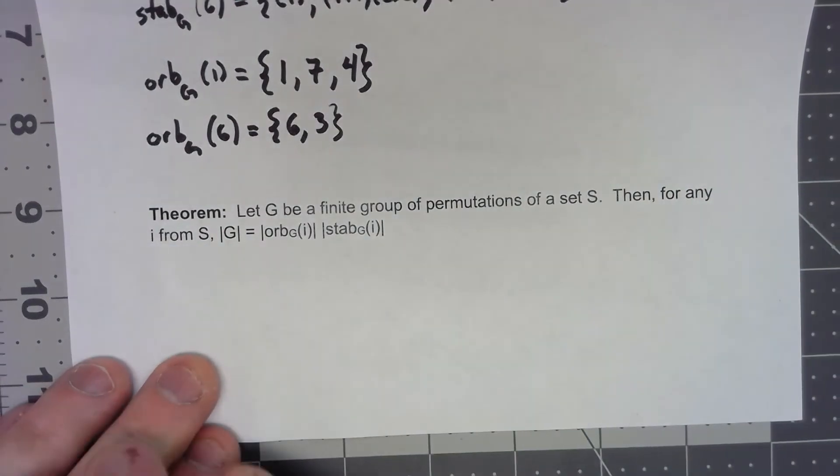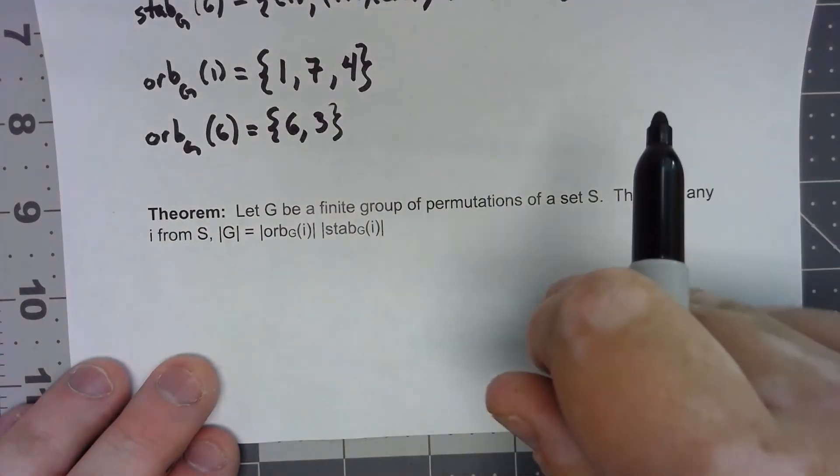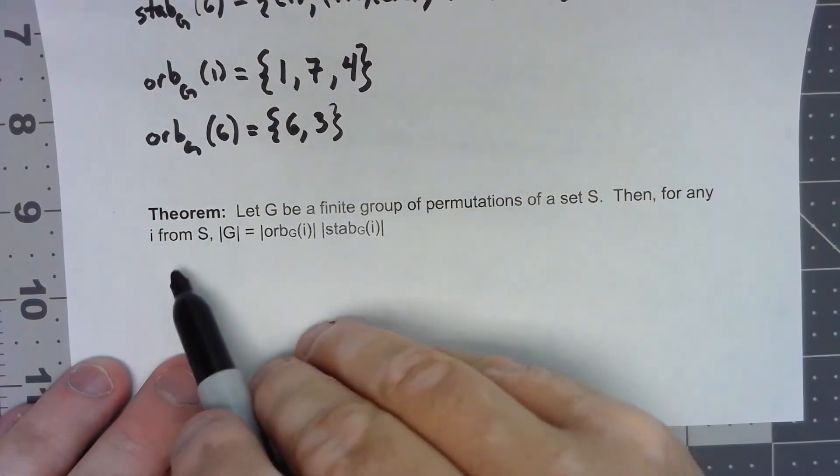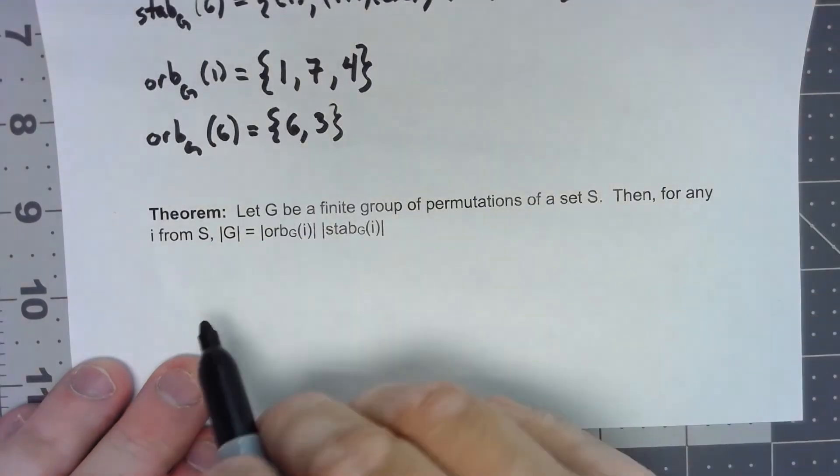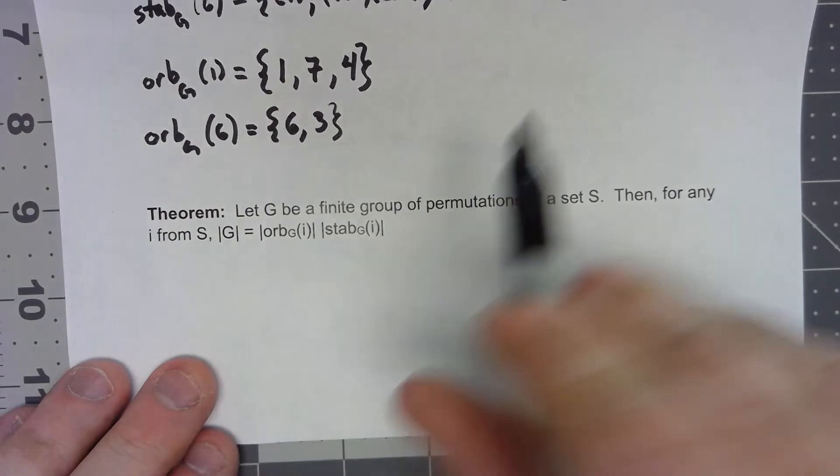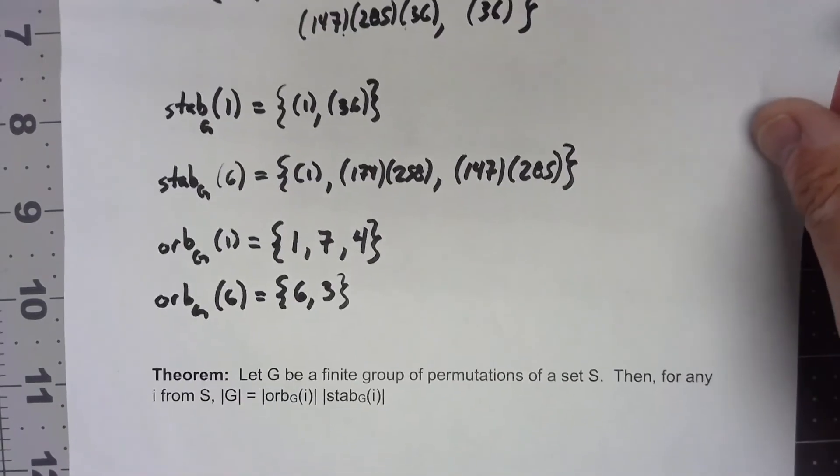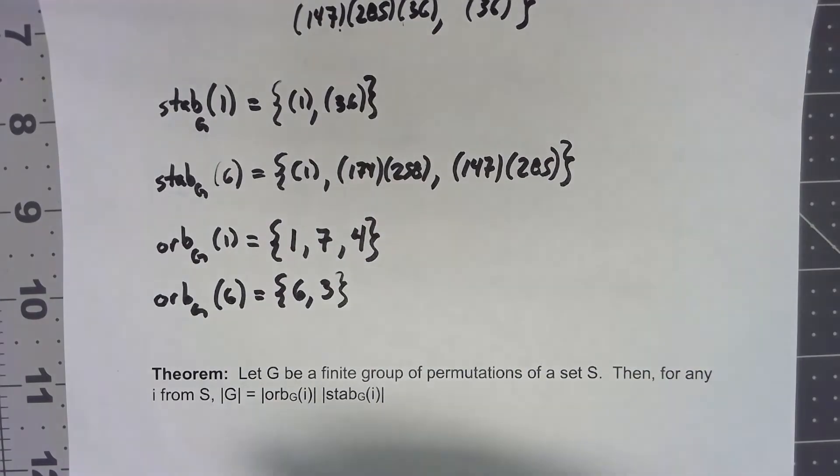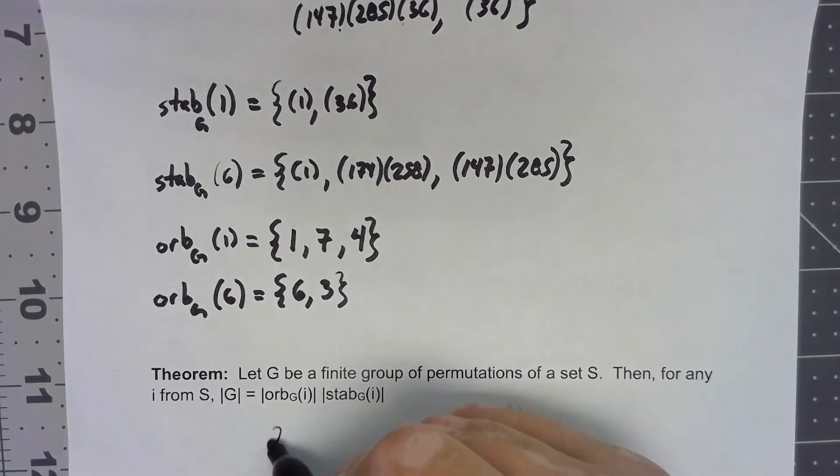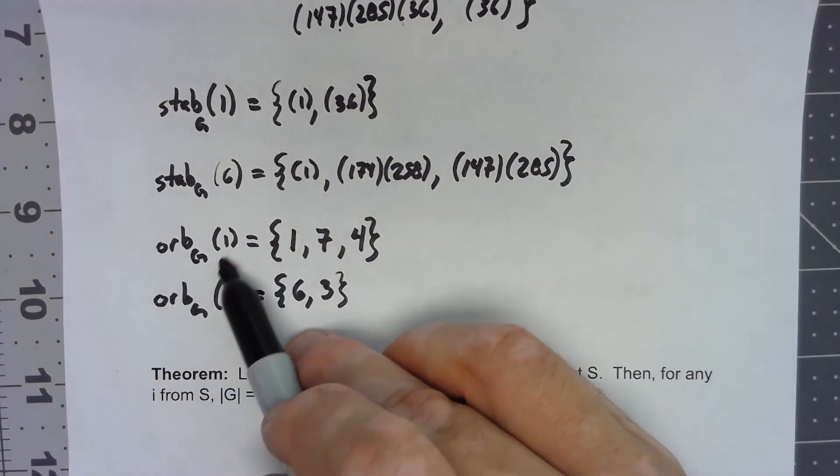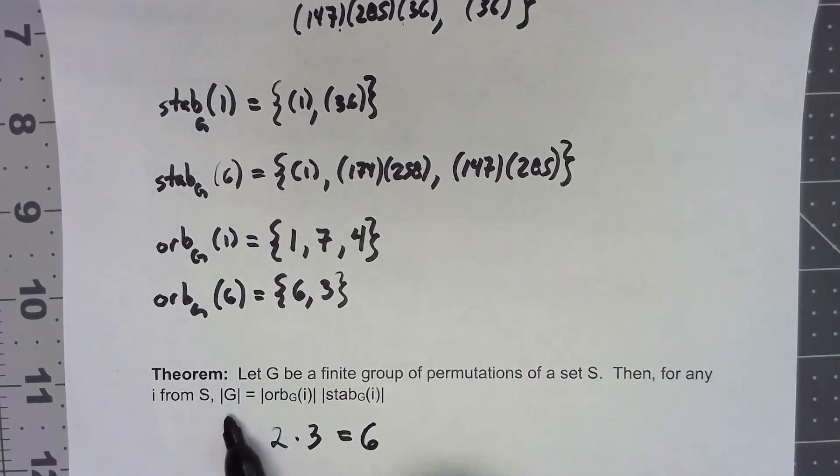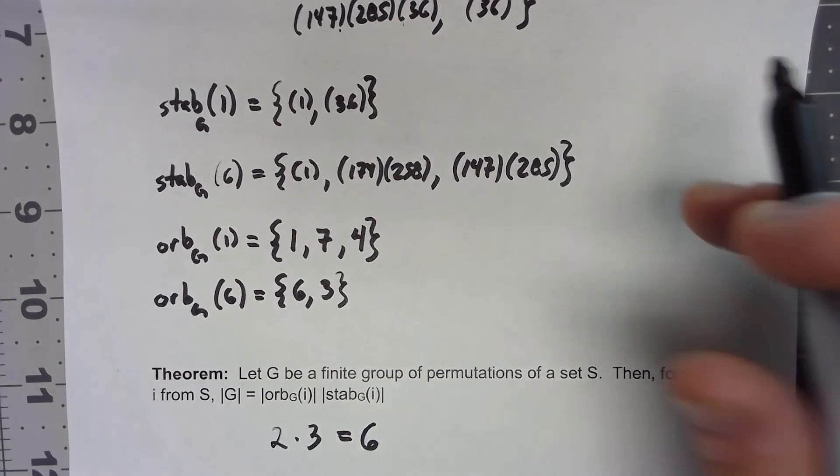One final theorem that I'm not going to prove is that if we have one of these things, then for any i in your set of things being permuted, the order of your group has to equal the order of the orbit times the order of the stabilizer. So looking back at what we just did, if we look at one, the order of the stabilizer in G of one is two, the order of the orbit in G of one is three, and the order of G, there were six things in there, six permutations.